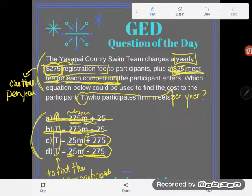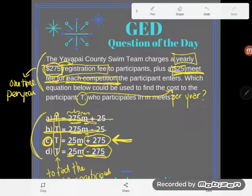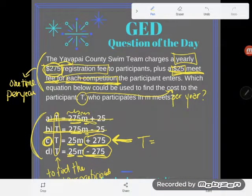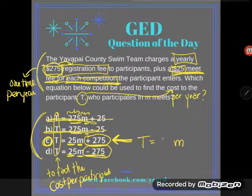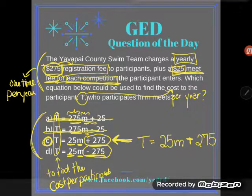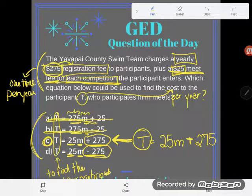Is that $275 — that first fee we're paying — in addition to the meet fees, or does it get taken away from them? Of course, that original $275 is in addition to the meet fees, and so C is my correct answer. Notice I didn't even use a lot of algebra — I just used some common sense. To find the total cost for the year, I take the number of meets times $25 plus the $275 registration fee, and by using this equation I can find the total amount I'll spend all year on my swim team.